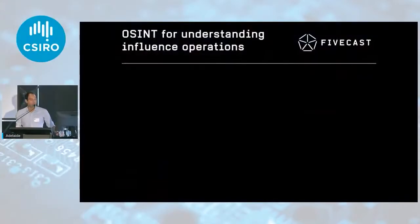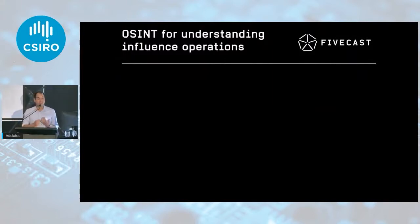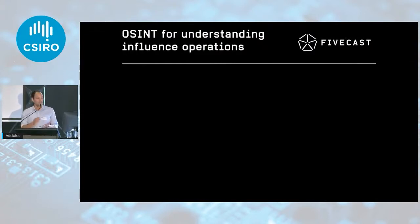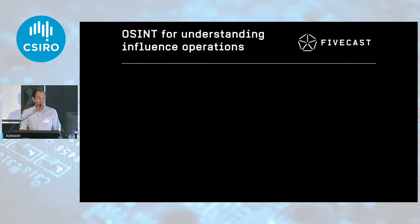Today, I'm talking about OSINT for understanding influence operations. That's open source intelligence, which, for those unfamiliar, is simply any intel that we can gather from the open internet — social media, deep web, dark web, et cetera. Over the course of this talk, I'll cover the importance of understanding online narratives, including how adversarial entities may attempt to manipulate them via influence operations, the challenges of using data from the surface, deep, and dark web, and the application of advanced OSINT technology for understanding influence operations.